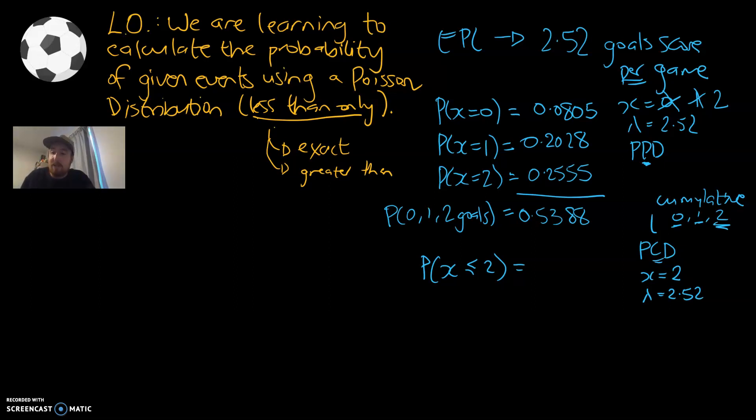When we put that into us in our graphics calculator in PCD mode, x value would be two, lambda would be 2.52, and that would give us a probability of 0.5387. With one calculation, we've actually calculated it straight away. That difference, I'd suggest, was just rounding from the previous three calculations up there. So PCD mode, a very powerful way to use Poisson distributions. We're going to get into some more examples about how to do that.